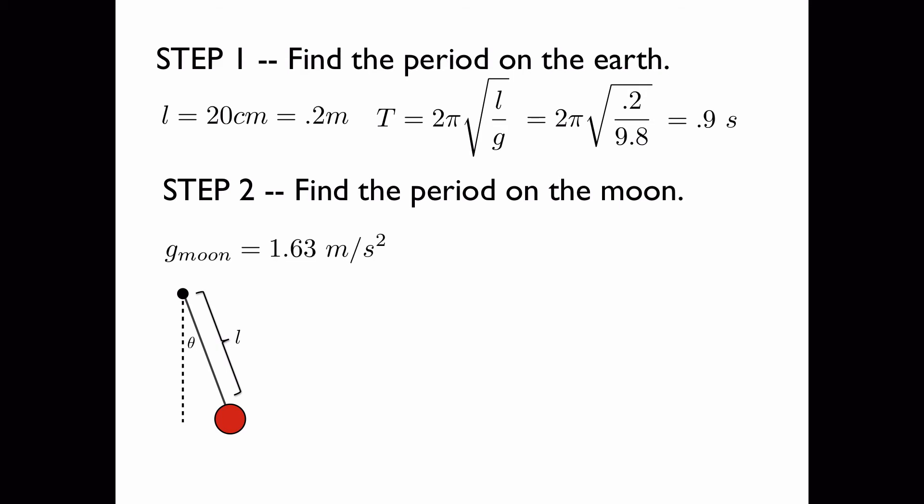Next we'll find the period on the moon. I've looked up the acceleration due to gravity on the moon. Then all we have to do is plug this into the equation, and we get a new period of 2.2 seconds, which is longer than the period on the earth.